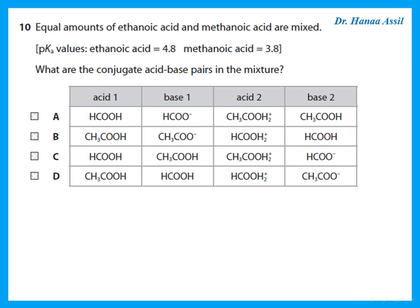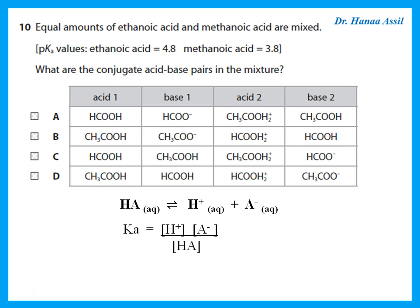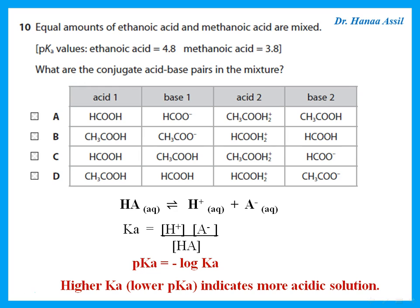Equal amounts of ethanoic acid and methanoic acid are mixed. One acid must donate a proton and the other must accept it. The one with the lower pKa is more acidic. Methanoic acid has the lower pKa, so it is the proton donor — HCOOH gives a proton to become HCOO⁻. Ethanoic acid accepts the proton and becomes the conjugate acid.